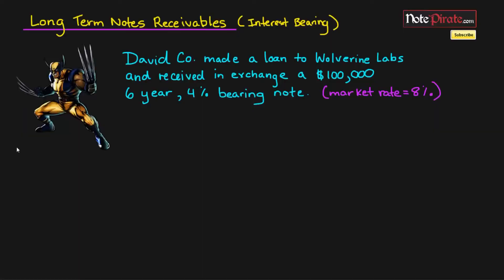We've got a lot to cover in this tutorial — hopefully we can finish within 10 minutes, but I'm not making any promises. Feel free to fast-forward at any given moment if you get bored. Last time we found the present value of our note by finding the present value of the single sum face value and also the present value of the annuity or the interest payments. Altogether, the present value of that note was $81,508.48, so the face value was $100,000, the present value was $81,508, and the difference is the discount.